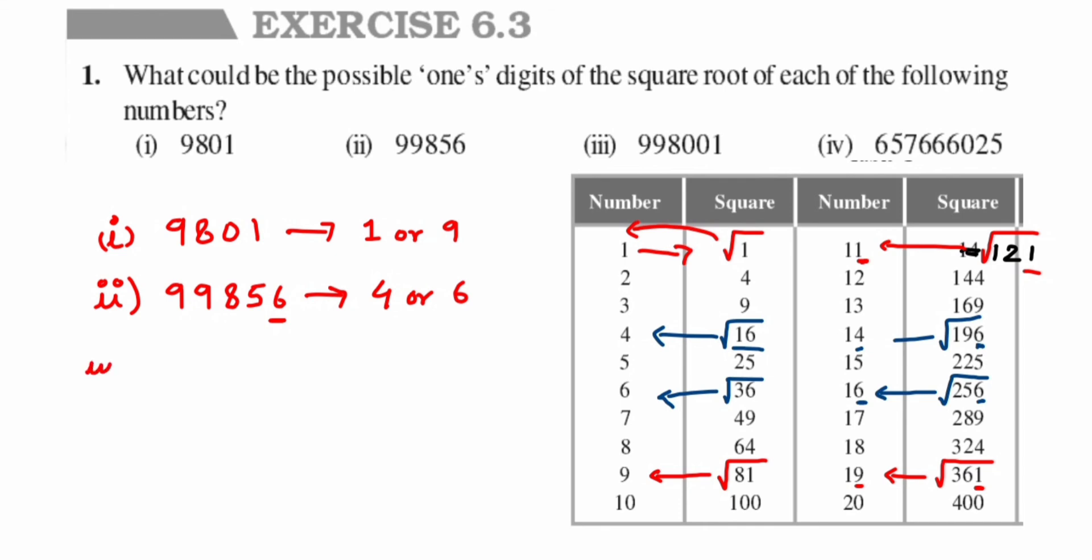Now the third one. Again, the number ends with 1, so it will be the same as the first one. So 998001—I'll get 1 or 9 in this case also.